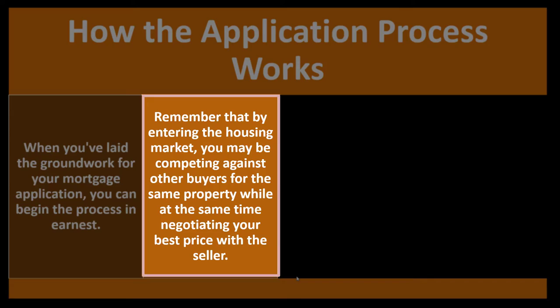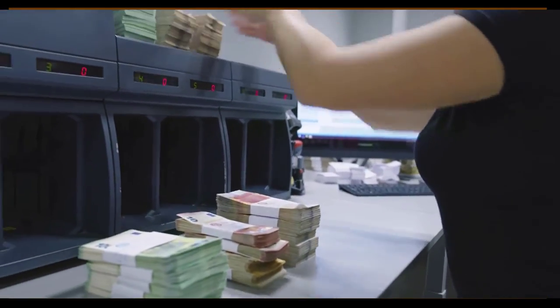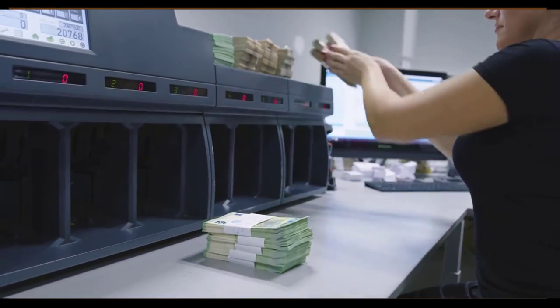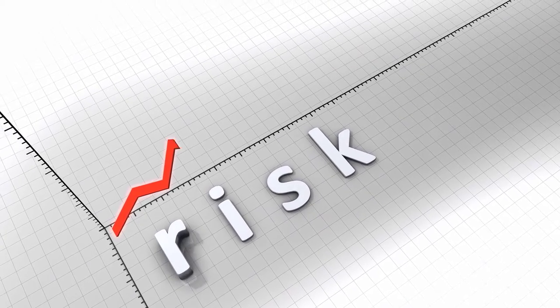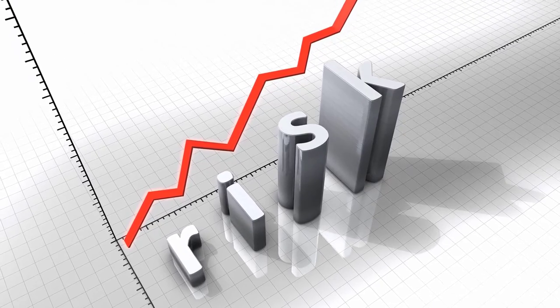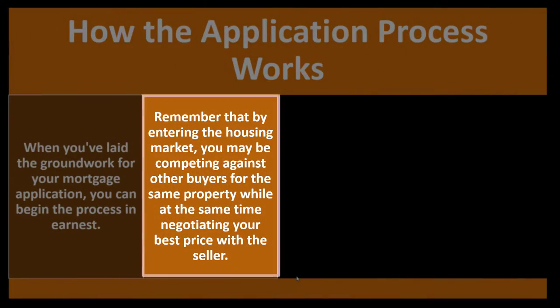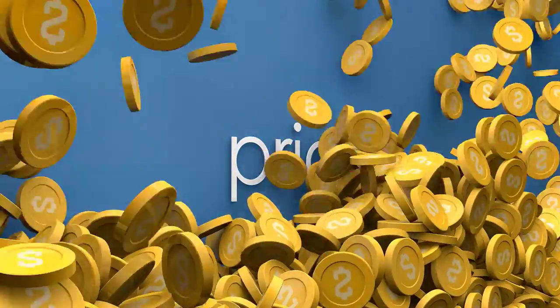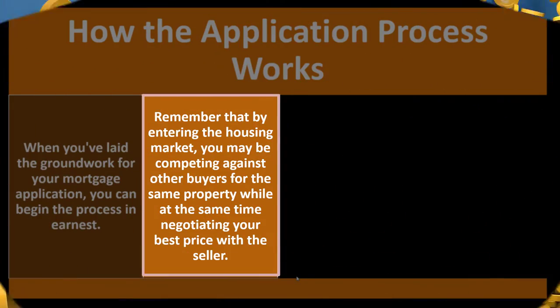We've got to think about it from the bank's standpoint — we're doing business with them by getting a loan. They want to give the loan because they're making interest on it, but they want security because they're balancing the risk. And then we're going into business with the seller of the home, competing with others who might want the home at the same time. We can compete on price, but that's not the only thing — we also want to compete on anything we can get an edge on.